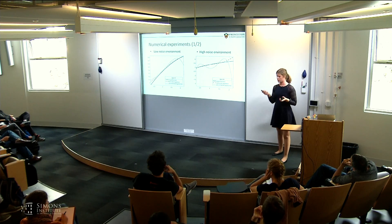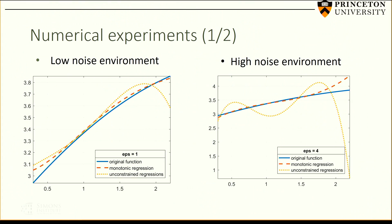How does this perform in experiments? This is a projection onto one particular feature of a multivariate polynomial obtained with our regression. With this feature, the function is known to be monotone — that's the blue line here, which is the original function. We consider two environments: low noise and high noise. We show an unconstrained regression in pale orange and a monotonically constrained regression in darker orange. In the high noise environment, unconstrained regression overfits considerably, whereas our polynomial, integrating monotonicity, is more robust and follows more closely the original function.